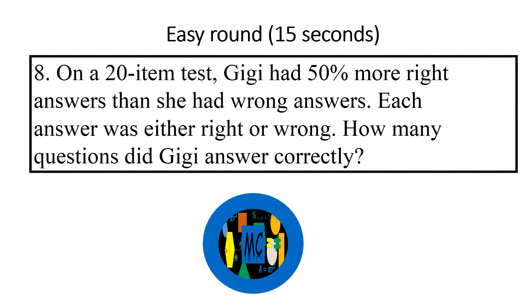In the 20 item test, Gigi had 50% more right answers than she had wrong answers. Each answer was either right or wrong. How many questions did Gigi answer correctly?